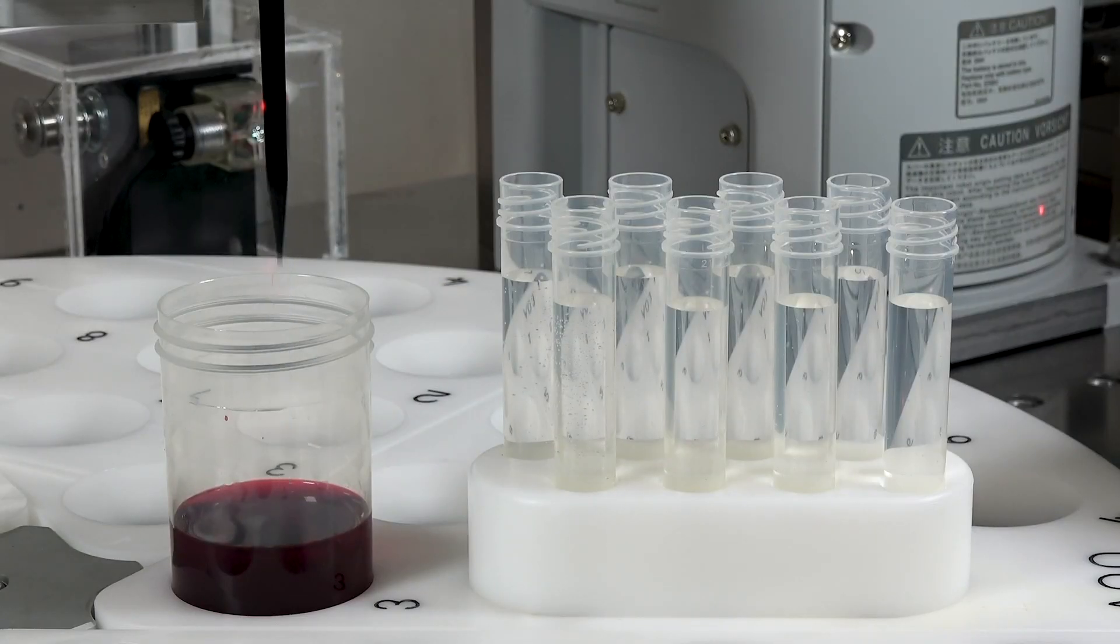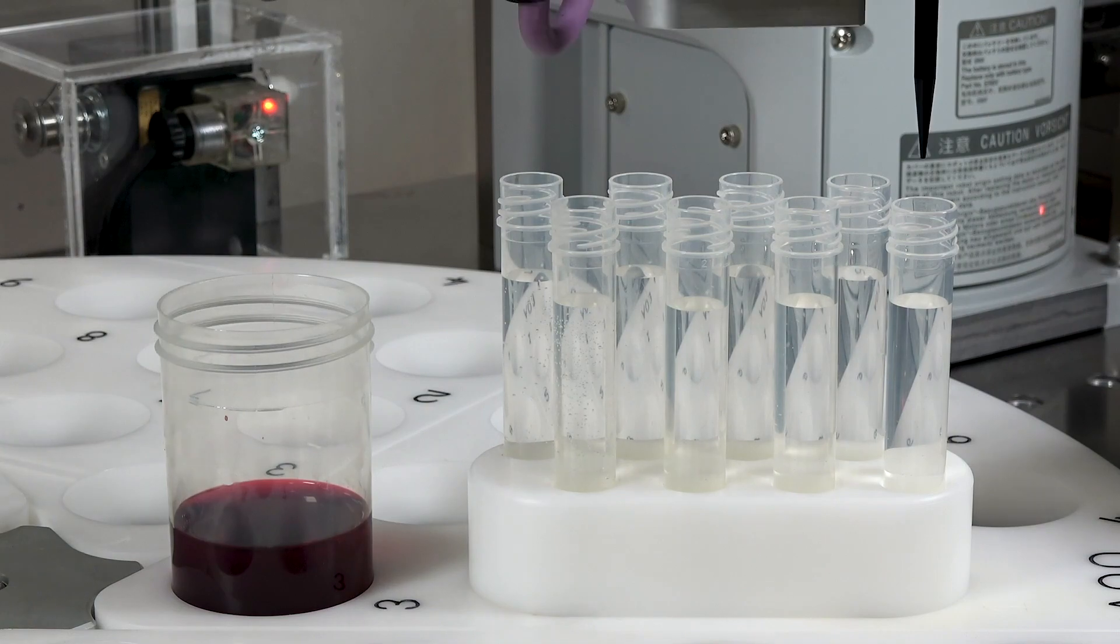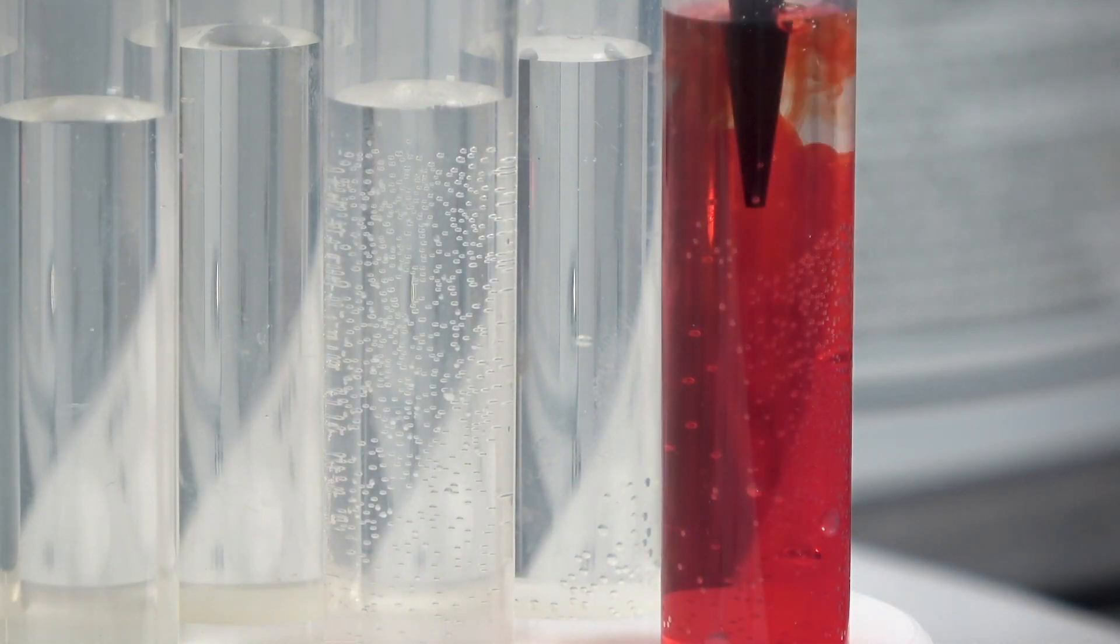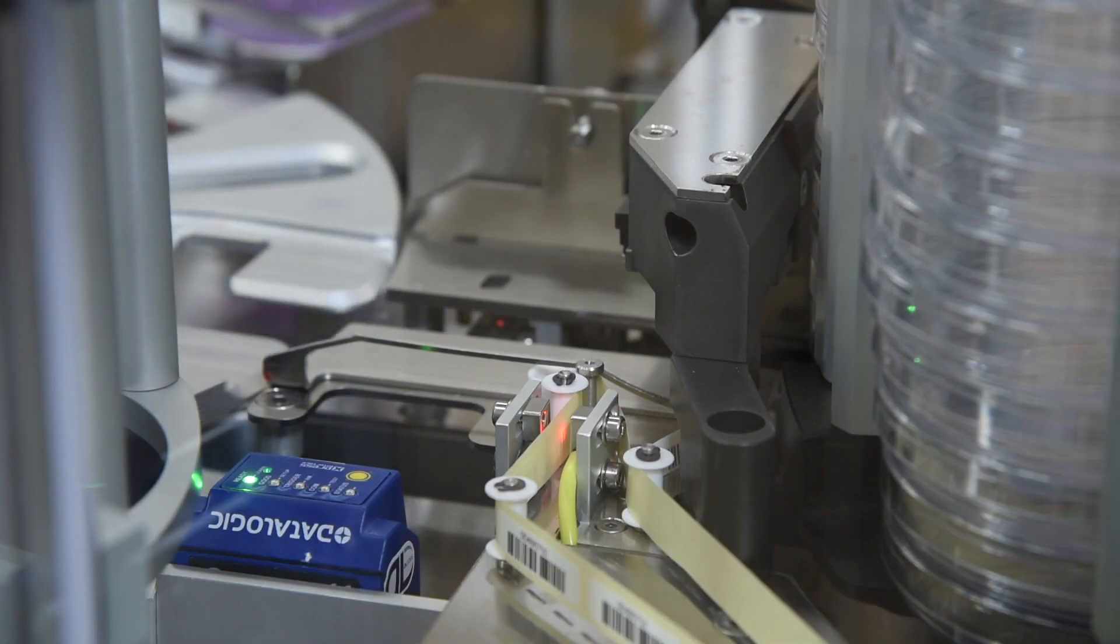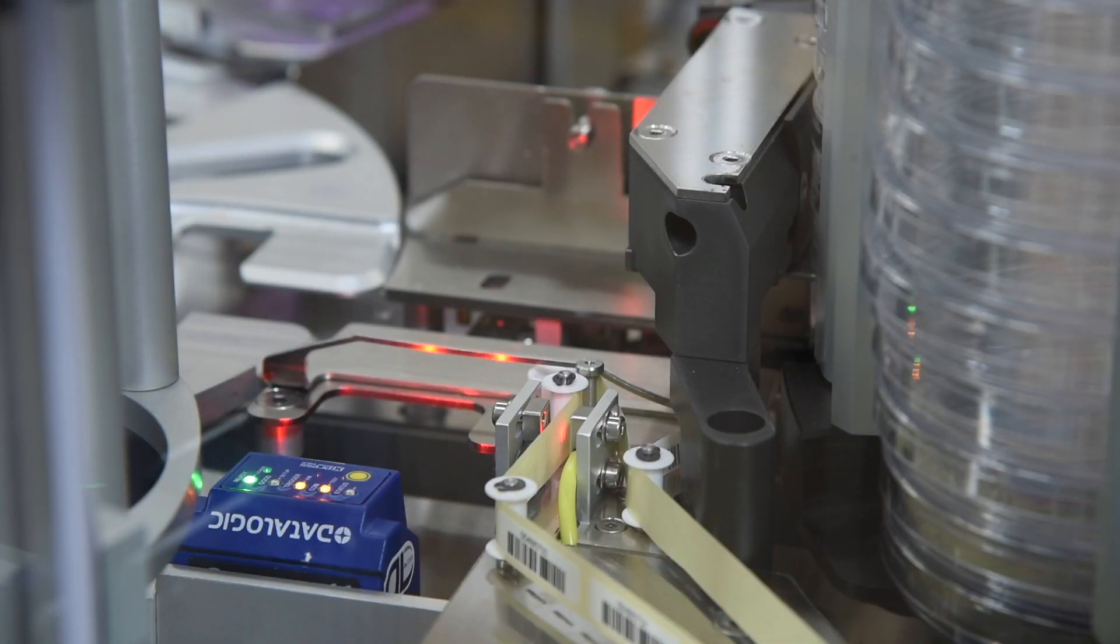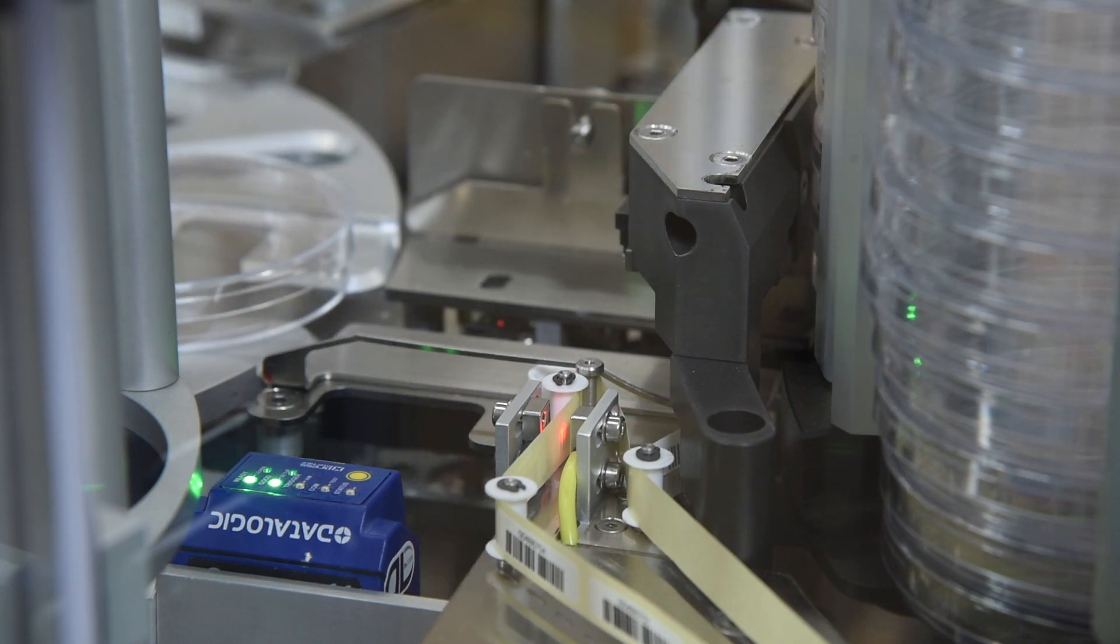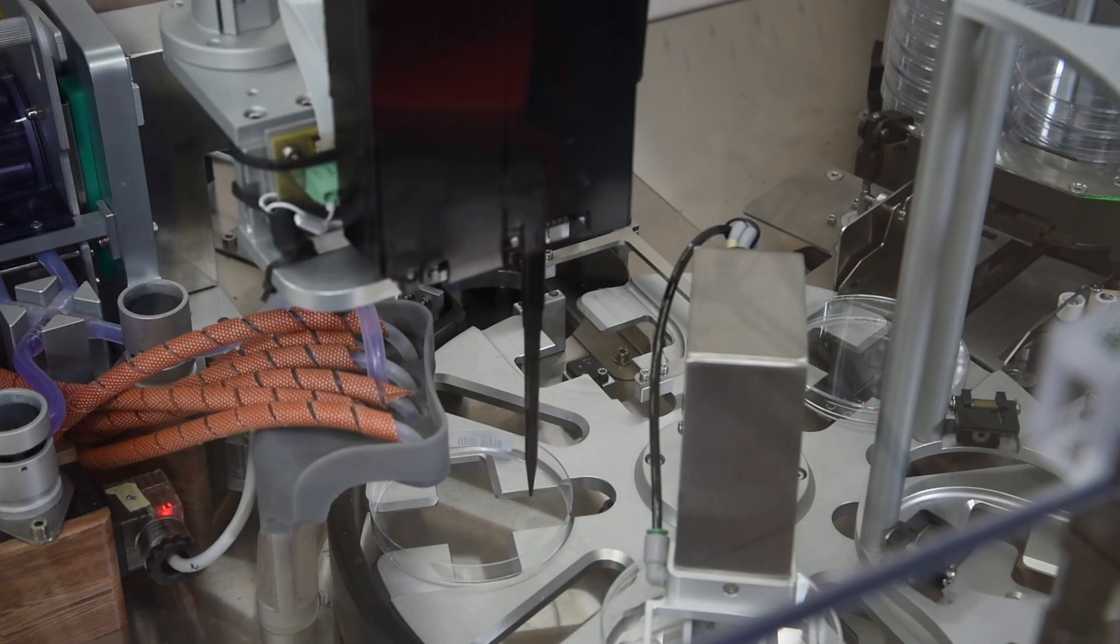If dilutions are required, the Cyclone automatically dilutes the sample using liquid sensing pipette tips that ensure accurate inoculum delivery. Simultaneously, the Cyclone automatically labels an empty plate from the carousel and sends the plate to the pipetting platform.